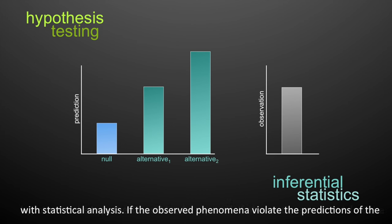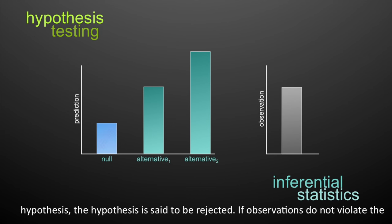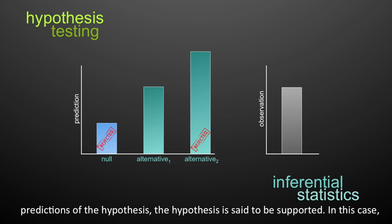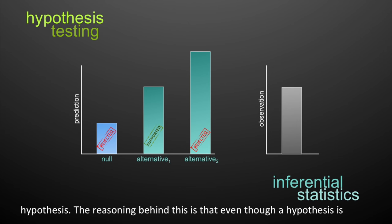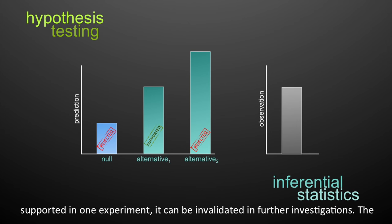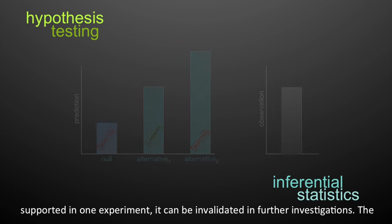If the observed phenomena violate the predictions of the hypothesis, the hypothesis is said to be rejected. If observations don't violate the predictions, the hypothesis is said to be supported. Some scientists prefer the terminology 'fail to be rejected' in lieu of supporting a hypothesis, because even though a hypothesis is supported in one experiment, it can be invalidated in further investigations.